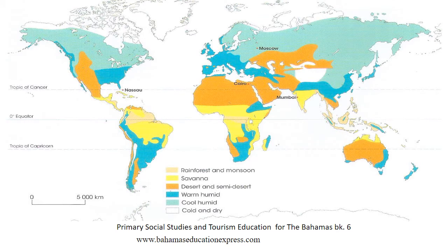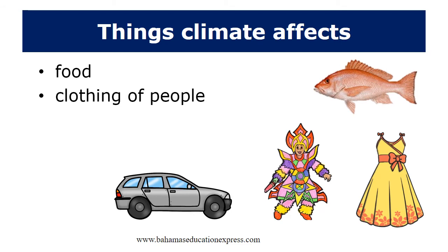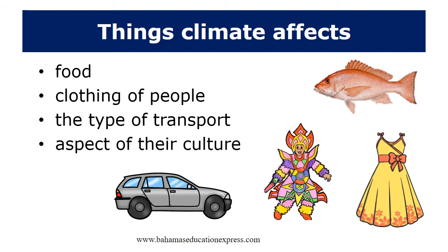Here is a map of the world. Things climate affects include food, clothing of people, the type of transportation, and aspects of their culture.